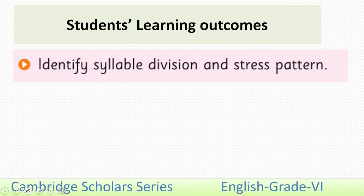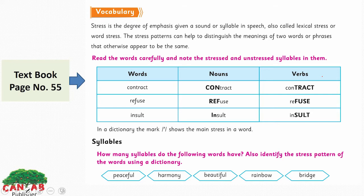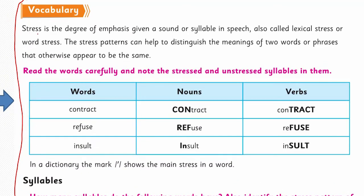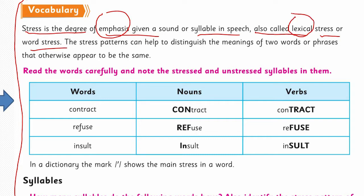The SLOs of this lesson are to identify syllable division and stress pattern — page number 55 of your textbook. We have a vocabulary section here. Today we are going to discuss syllables and stress in words. Stress is the degree of emphasis given to a sound or syllable in speech — like when we put emphasis on something. It is also called lexical stress or word stress, where 'lexical' is related to the meaning of the word.